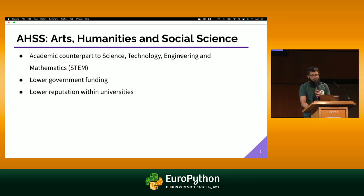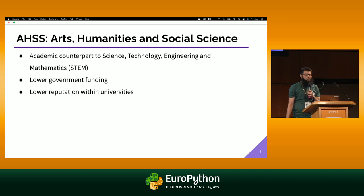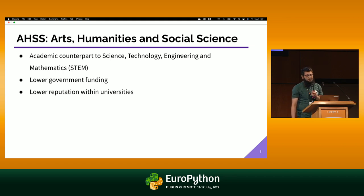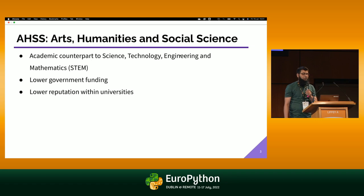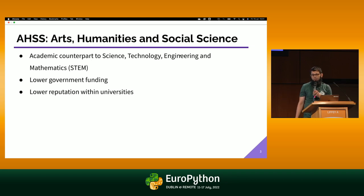Arts, humanities, and social sciences — the academic counterpart to this is STEM: science, technology, engineering, and mathematics. But when it comes to arts, humanities, and social sciences, this is where the user or the human exists. A lot of the time when we are trying to solve a problem, it's mostly about humans.